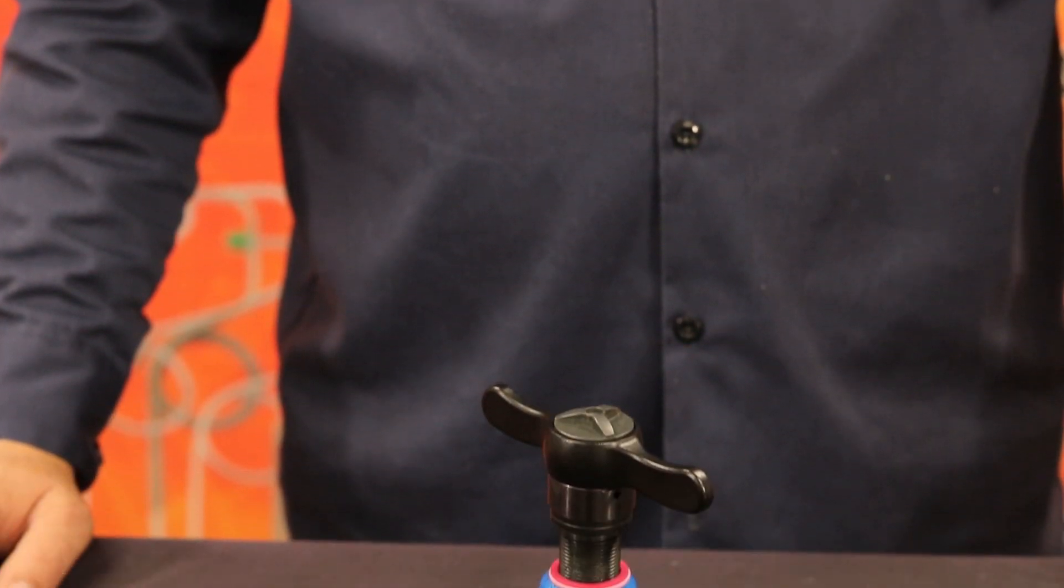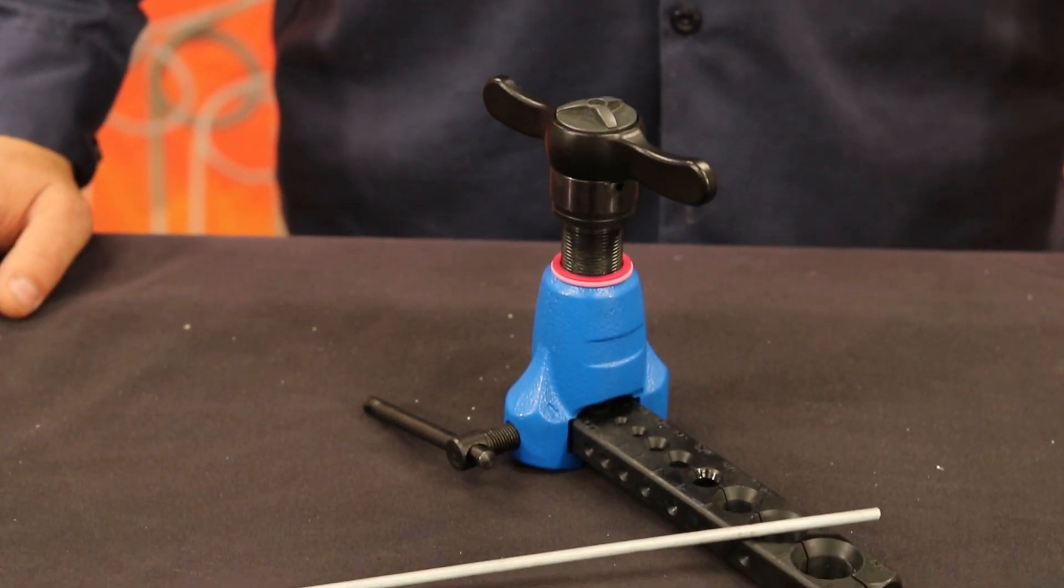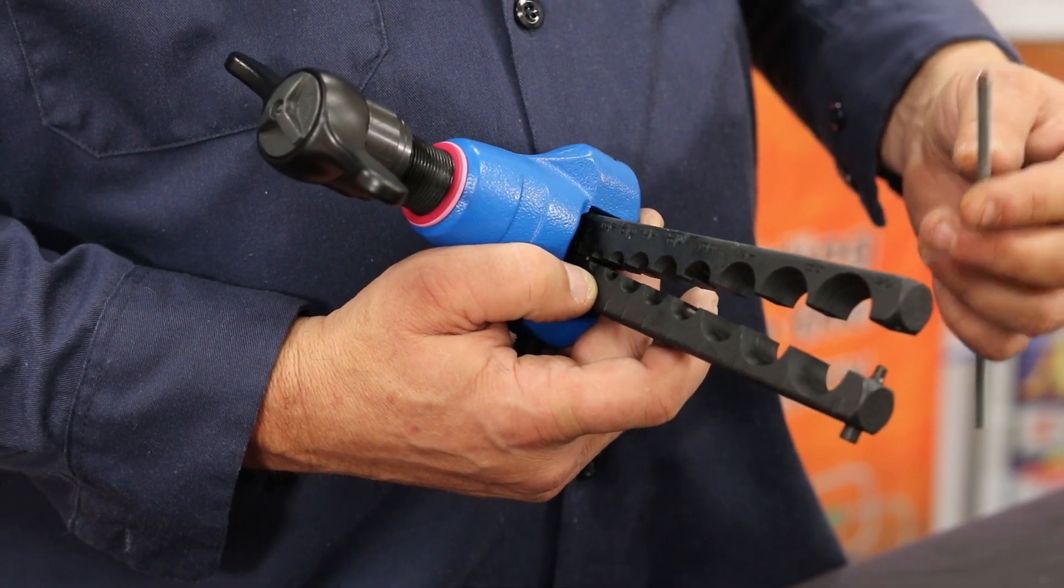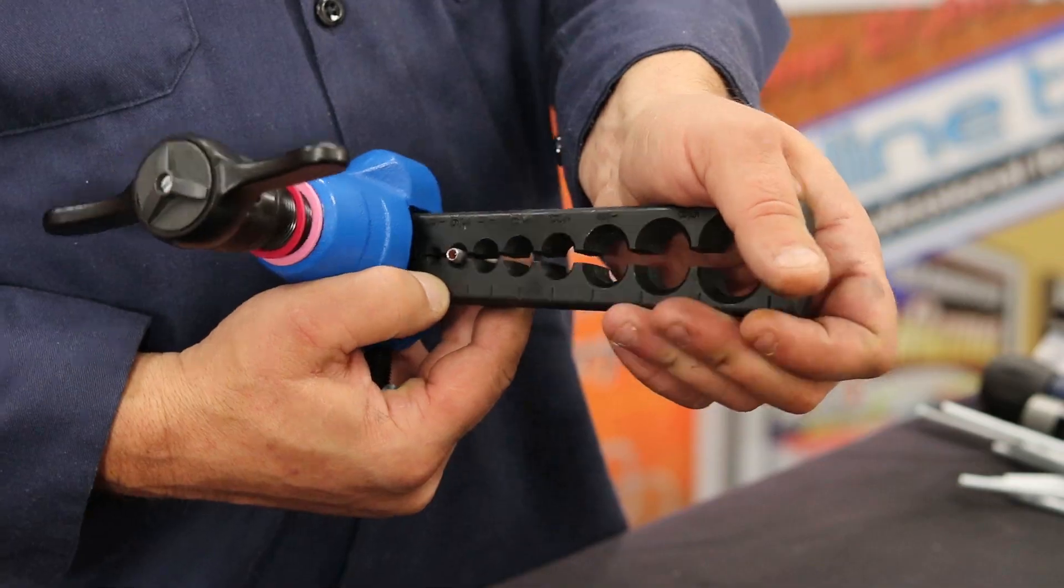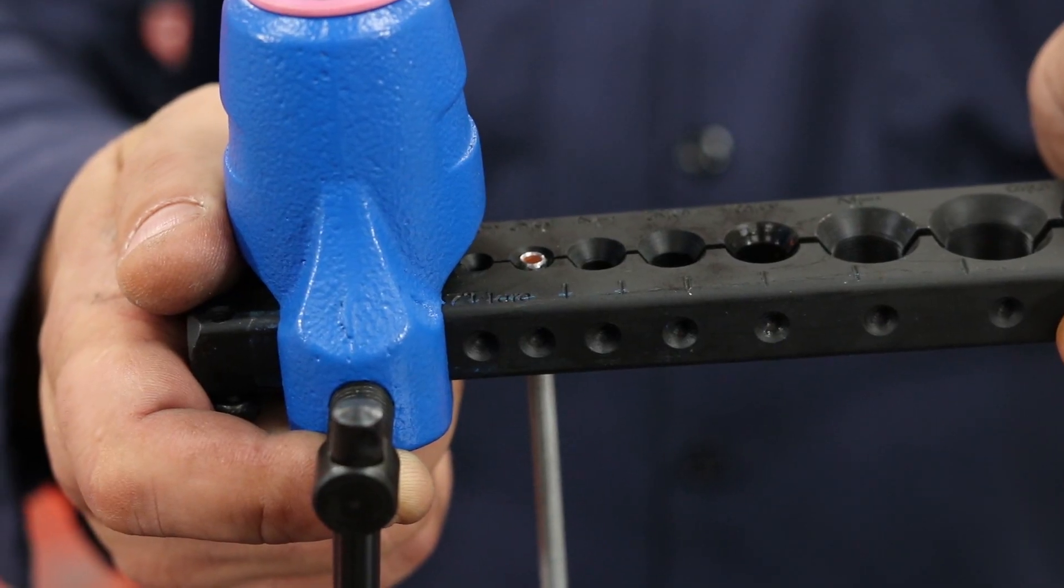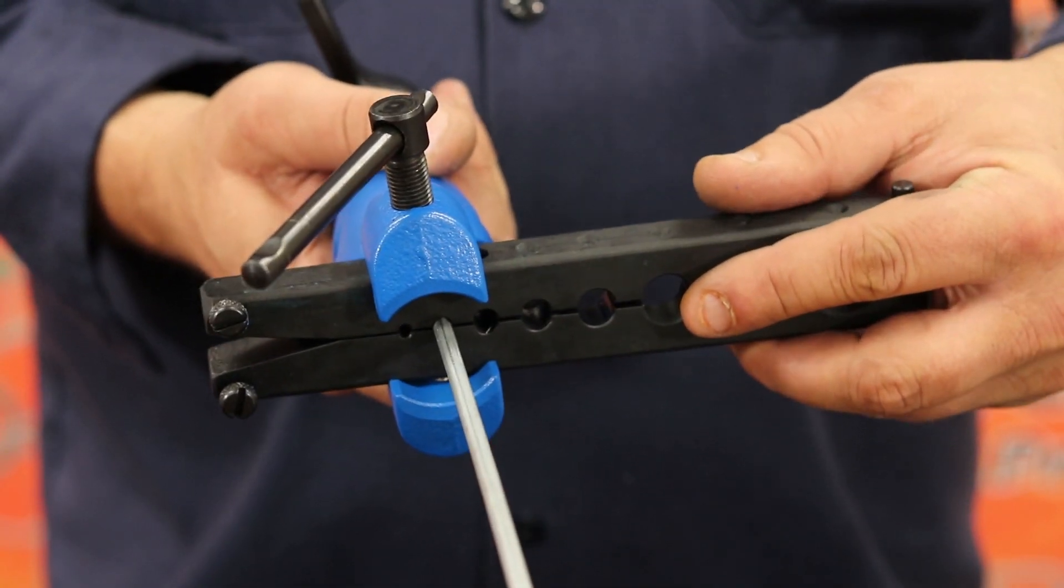Next, you will need your 37-degree single flare tool. Now that you have your 37-degree tool, locate the die block and begin feeding your line through until the tip is flush with the block. Now use the side clamp to hold the tube.